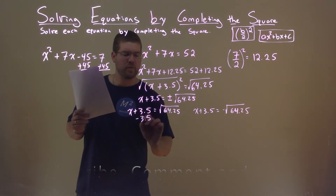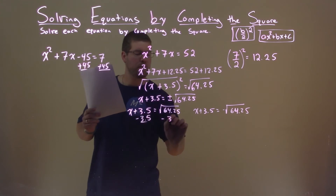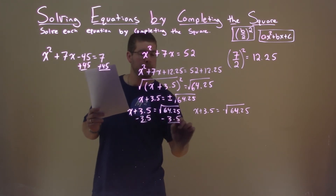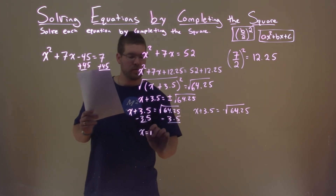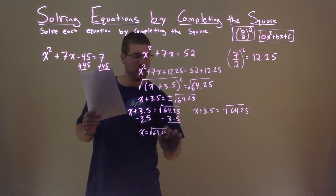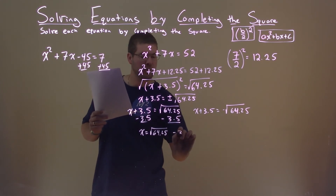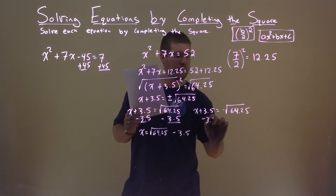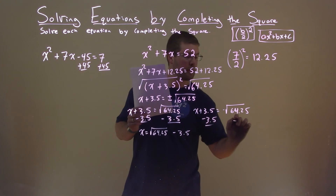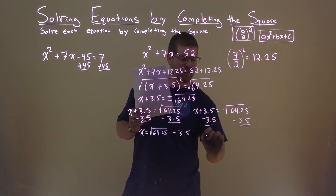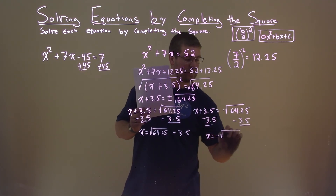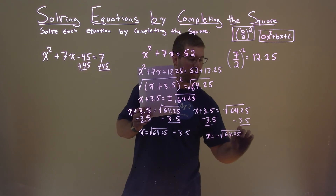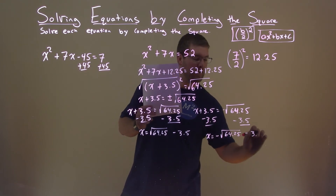Subtract the 3.5 from both sides, and we have x equals the square root of 64.25 minus 3.5. And we have x equals negative square root of 64.25 minus 3.5.